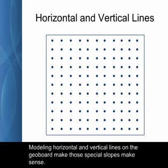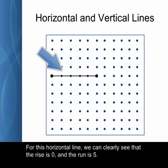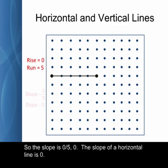Modeling horizontal and vertical lines on the geoboard makes those special slopes make sense. For this horizontal line, we can clearly see that the rise is zero and the run is five, so the slope is zero over five, zero. The slope of a horizontal line is zero.